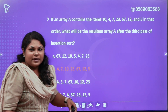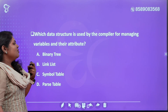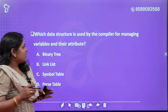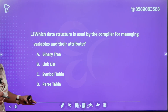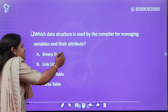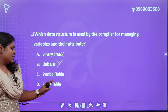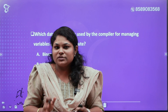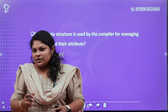Which data structure is used by the compiler for managing variables and their attributes? The options are: binary tree, link list, symbol table, or pass table. This is not binary tree. Link list is not correct. The symbol table is used. The answer is B — symbol table. The compiler uses the symbol table to look up the attributes of the program. This is our data structure question.